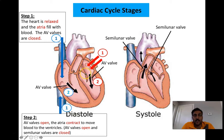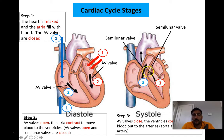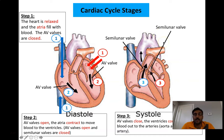Step two: the AV valves are going to open and blood is going to enter the ventricles. The left ventricle and the right ventricle fill, and the semilunar valves stay shut. Step three: the AV valves close. These valves that were open to fill the ventricles from the atria now shut, and the semilunar valves open. This allows blood to get pushed out — from the right ventricle through the semilunar valve into the pulmonary circulation, or from the left ventricle opening the semilunar valve to push blood through the aorta into systemic circulation.